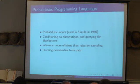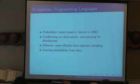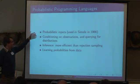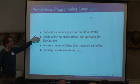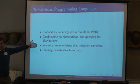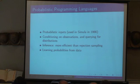Probabilistic programming languages have four things that they're doing. First, they have probabilistic inputs — as far as I can tell the first language is Simula in 1966, which explicitly had probabilistic inputs in the language. All of my examples are going to be from Simula. Then, what you can do in Simula is conditioning on observations and querying for distributions — querying about conditional probabilities. We can do inference: in Simula you can do rejection sampling straight out of the box. We also want to do more efficient inference, and we want to learn these probabilities from the data.